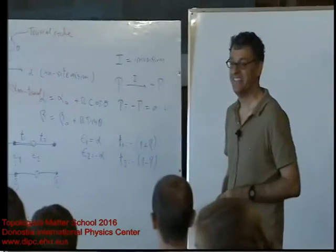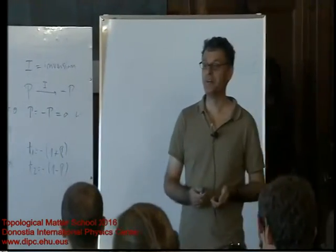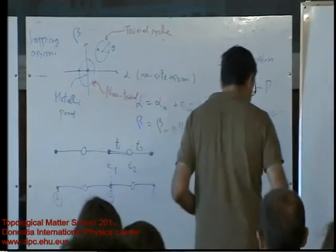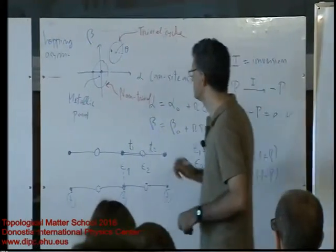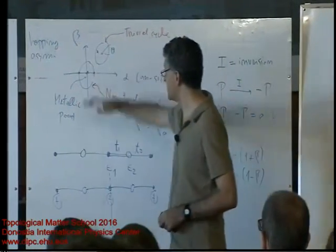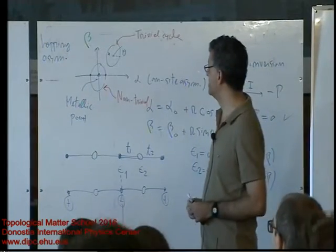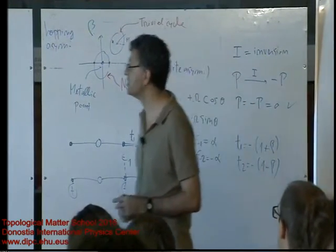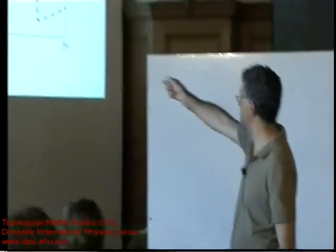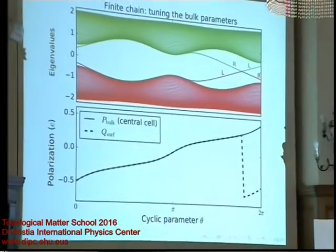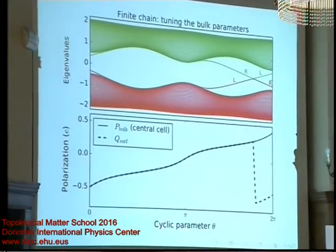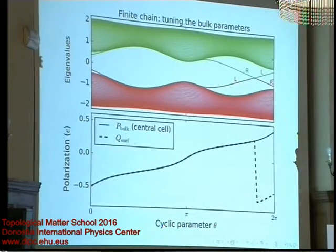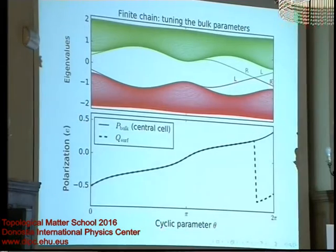That was my next very good point — that's the whole point of why I'm bringing this up. What happens at theta equals zero? So theta equals zero, we're also on the same line where there is no hopping asymmetry. But if we look at that plot, the polarization is non-zero. So what's going on? That's the final surprise I want to mention in this business.